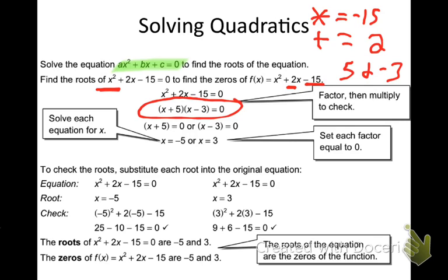Because I'm setting it equal to zero, there's like an invisible multiplication symbol between the factors. The only way to multiply and get zero is to multiply by zero. So I set each factor equal to zero: x plus 5 equals zero means x equals negative 5; x minus 3 equals zero means x equals 3. You can plug those back in to check, and they would check out. This is the process we're going to be doing today.